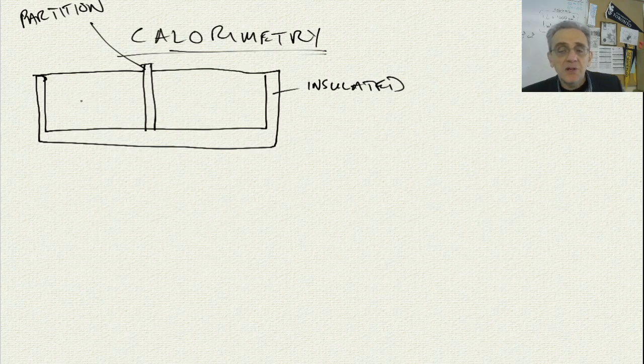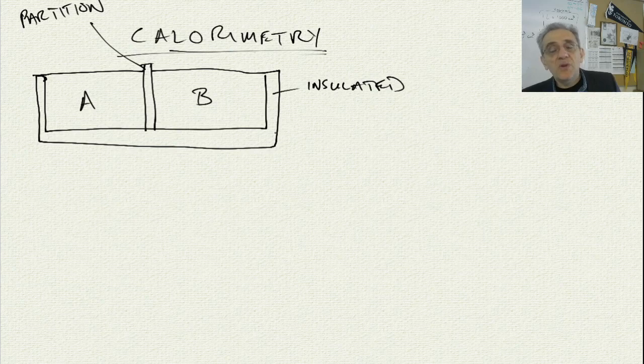In here you have material A, and in here you have material B. The reason why it's insulated is so that we don't have any transfer of energy in or out of the system. Let's call material A a liquid and material B a liquid. The reason why I want them to be liquid is because I'm going to end up mixing them by removing the partition and allowing the two solutions to mix.